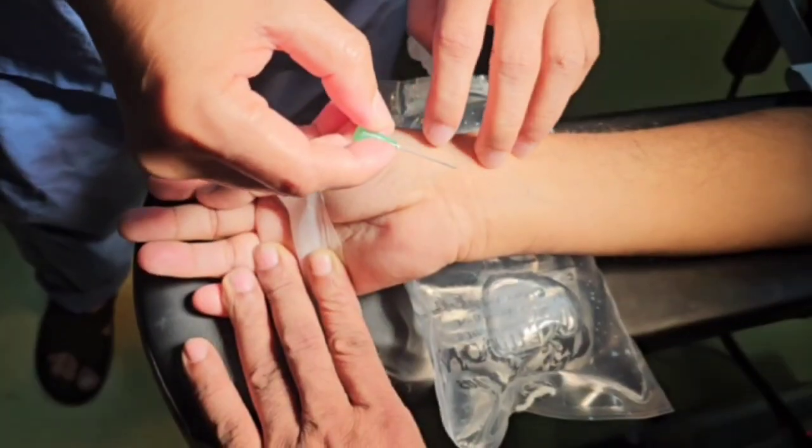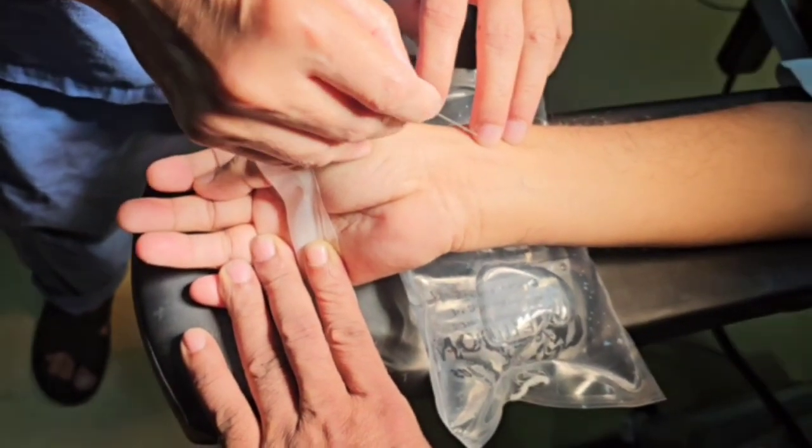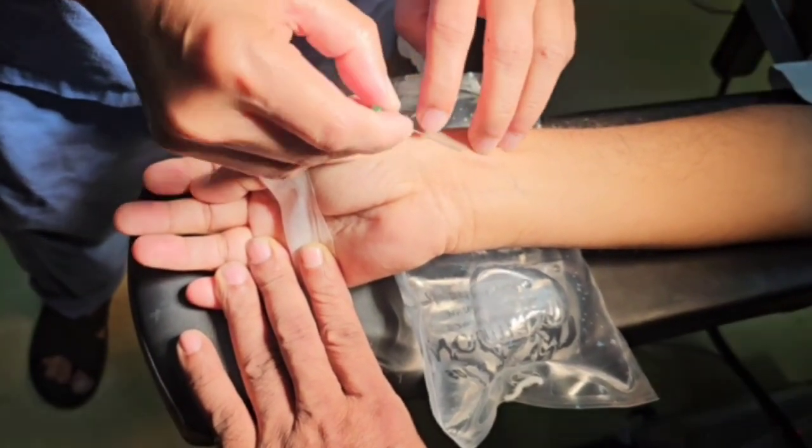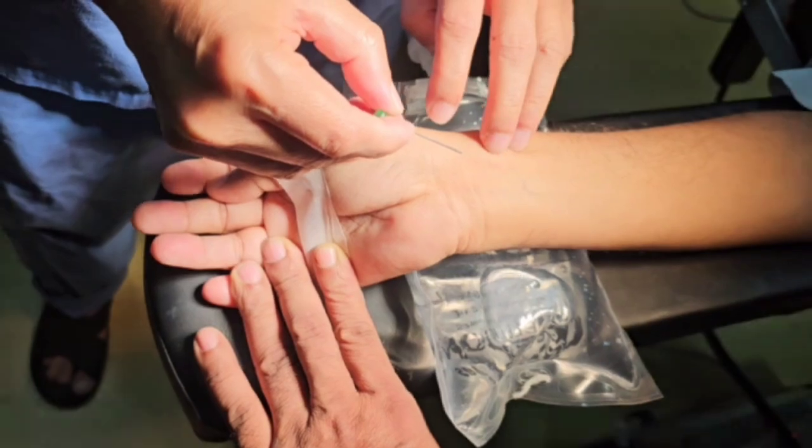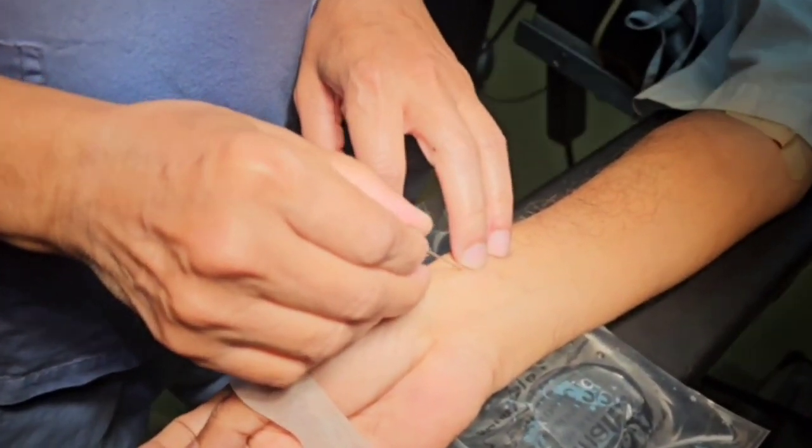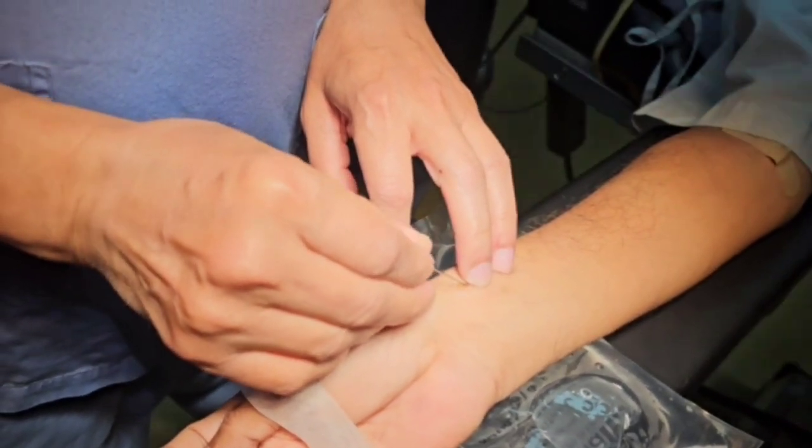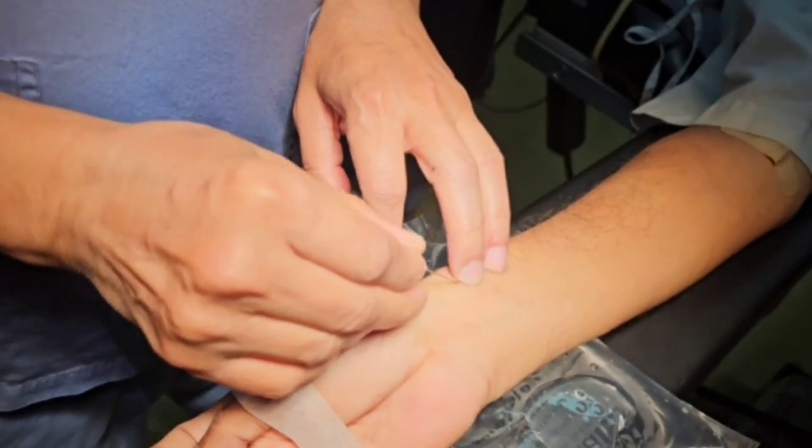There are usually two techniques for arterial line placement such as over the needle technique and over the wire technique. In this video we will approach with over the needle technique. For this approach we will insert the arterial catheter with needle.